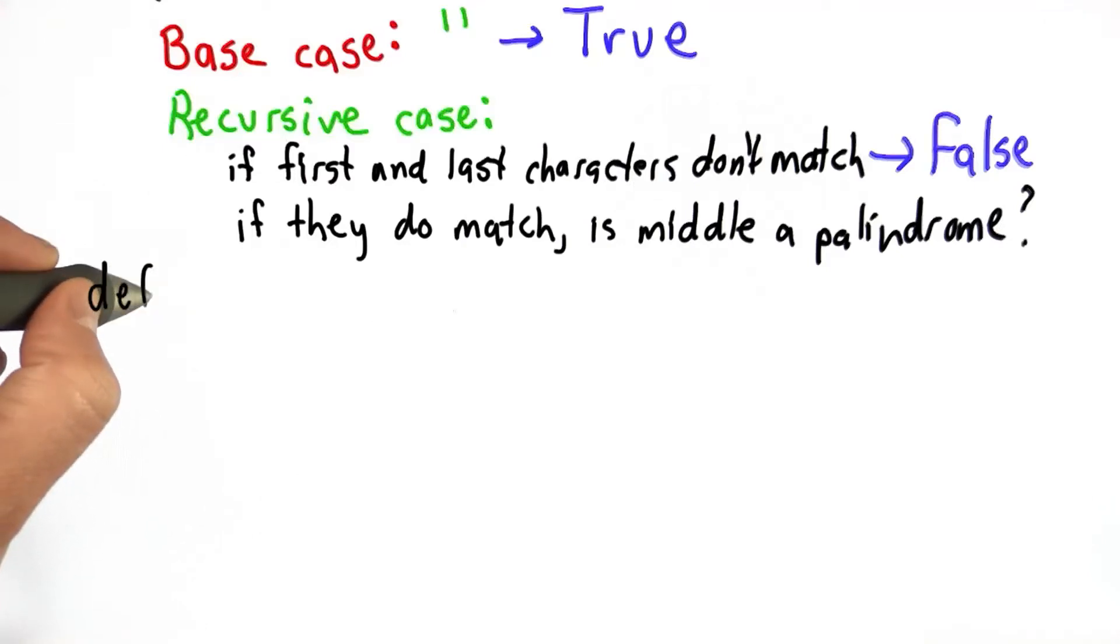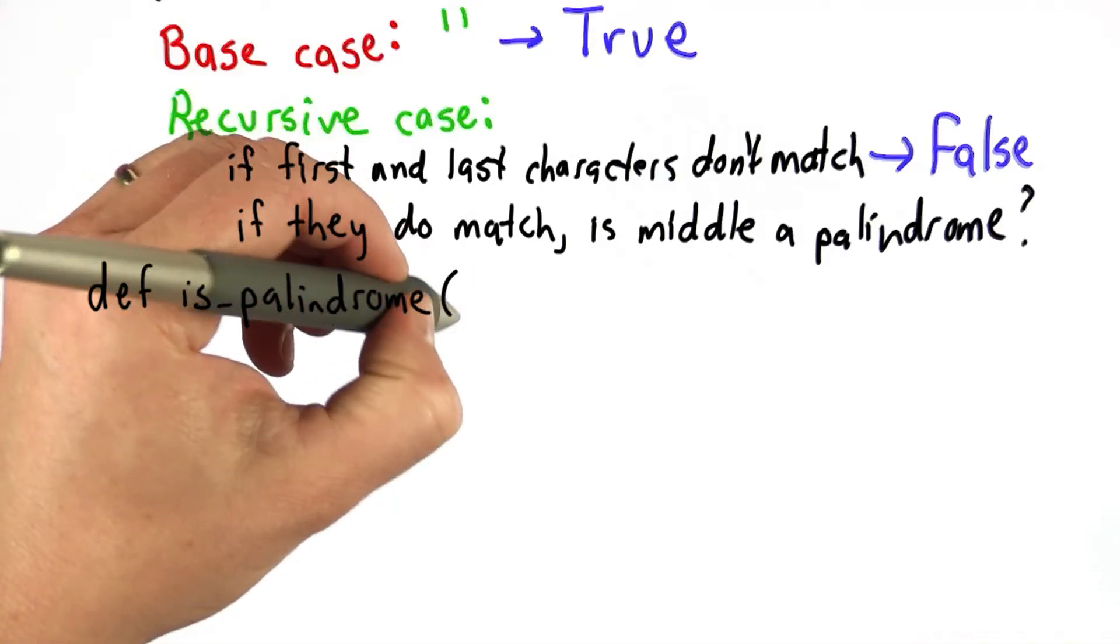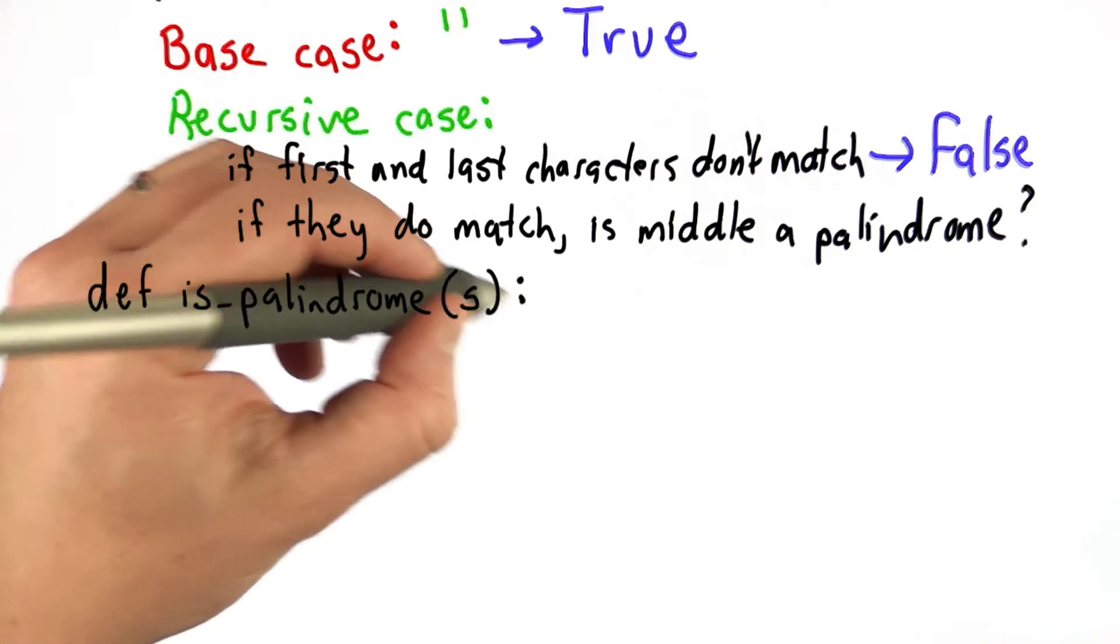So here's a way to define is_palindrome. We're taking a single string as an input. I'll call it s.